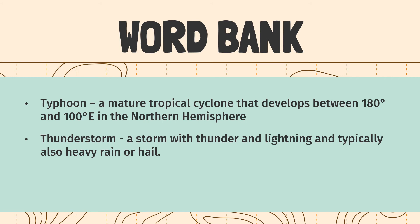Word bank. Here are some of the words used in this video lesson. Typhoon: a mature tropical cyclone that develops between 180 degrees and 100 degrees east in the northern hemisphere. Thunderstorm: a storm with thunder and lightning, and typically also heavy rain or hail.